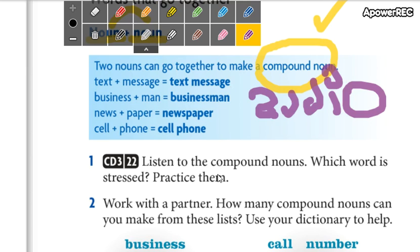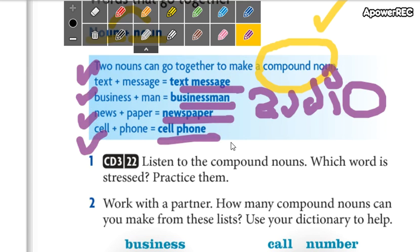So, you tell me the stress is on the first word, and then you read the four compound nouns. Or you tell me the stress is on the second word, and you read your compound nouns.